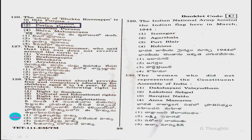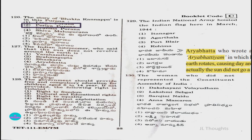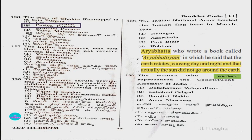Question number 127: The Indian astronomer who said that the sun does not revolve around the earth is — option 1: Varaha Mihira, option 2: Brahma Gupta, option 3: Bhaskara, option 4: Aryabhatta. In the social textbook class 6, it is clearly given that Aryabhatta wrote a book called Aryabhattiyam, in which he said that earth rotates causing day and night, and that the sun did not go round the earth. So the answer is option four, Aryabhatta.